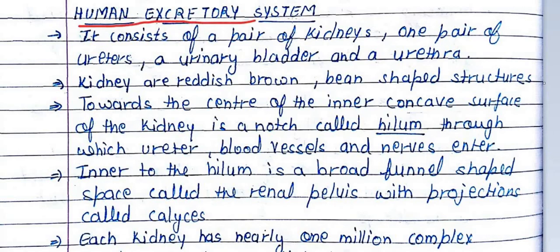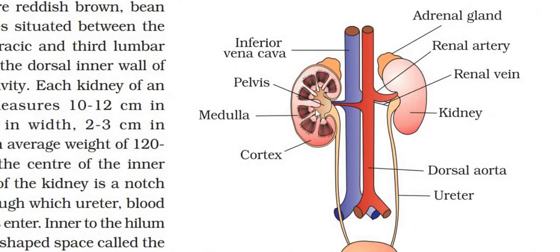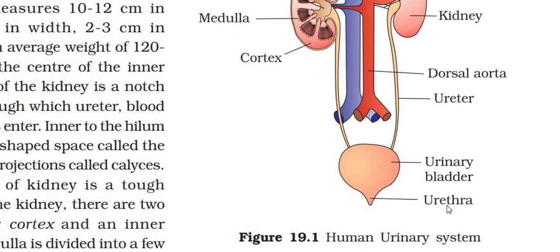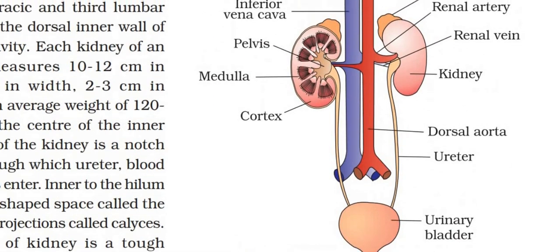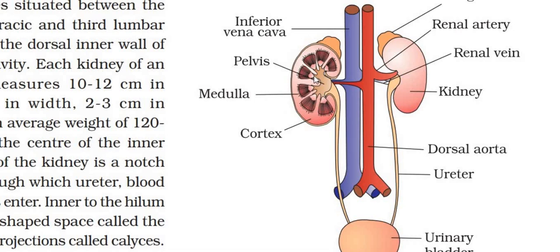Let's talk about the human excretory system. It consists of one pair of kidneys, one pair of ureters, one urinary bladder, and one urethra. The kidneys also have associated blood vessels such as the inferior vena cava, renal arteries and veins, and the adrenal gland is found here as well. Inside the kidney there are levels such as the pelvis, medulla, and outer cortex.